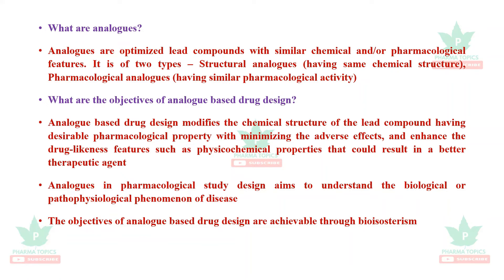Analog-based drug design enhances drug-likeness features such as physical-chemical properties to result in a better therapeutic agent. Analogues in pharmacological study design aim to understand the biological or pathophysiological phenomena of a disease. The objectives of analog-based drug design are achievable through bioisosterism.